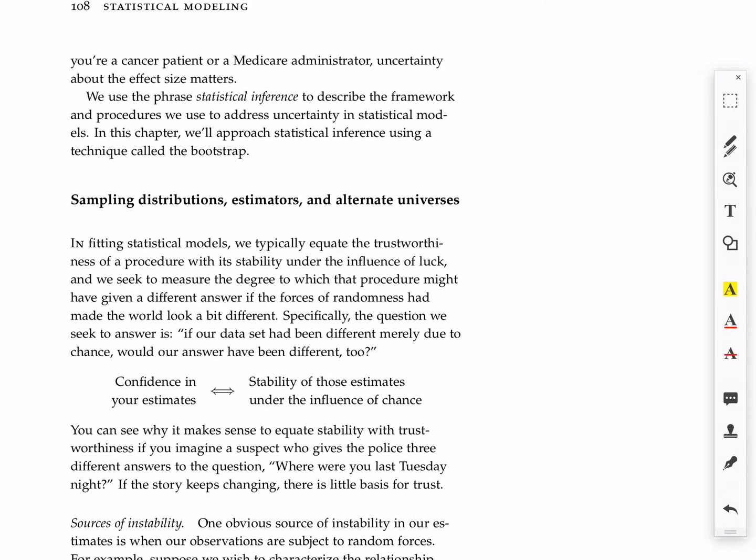Now, the key principle that underlies all of this behind the use of sampling distributions to quantify uncertainty is this equivalence. The idea that we can be confident in our estimates if and only if those estimates are stable under the influence of chance.